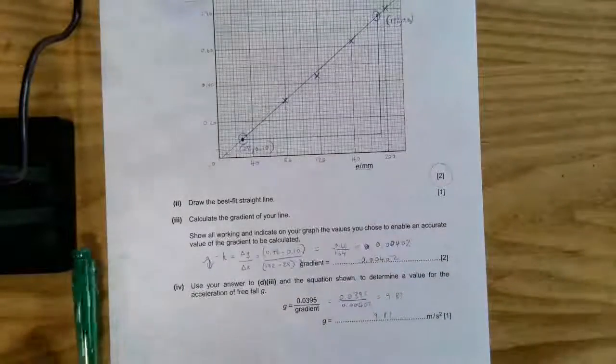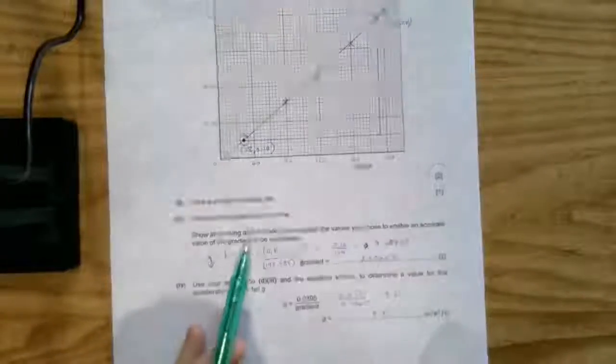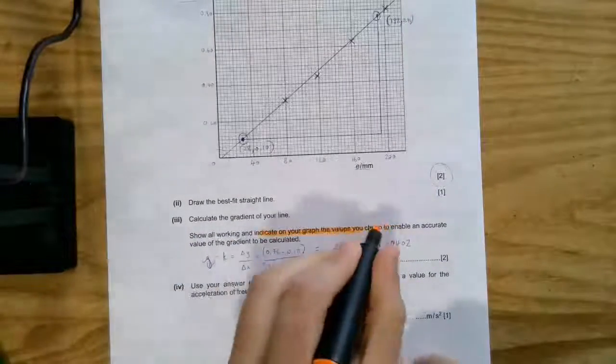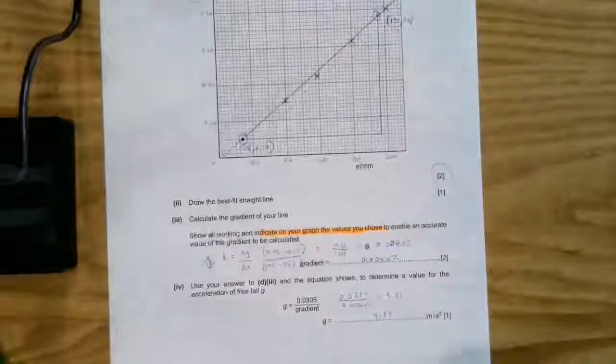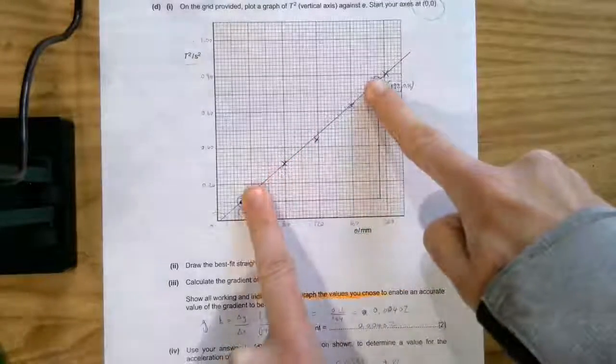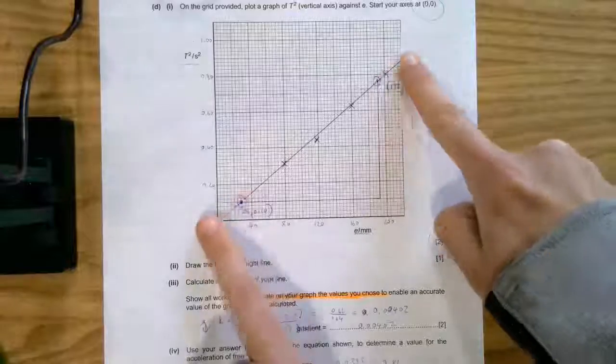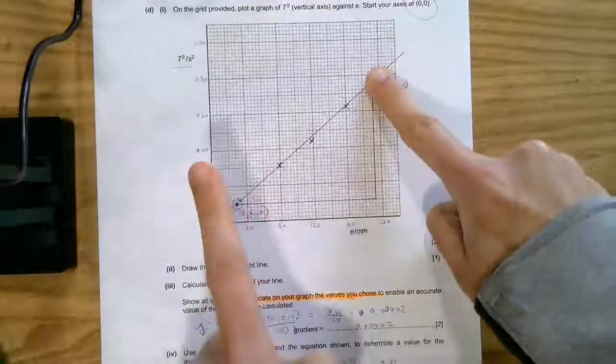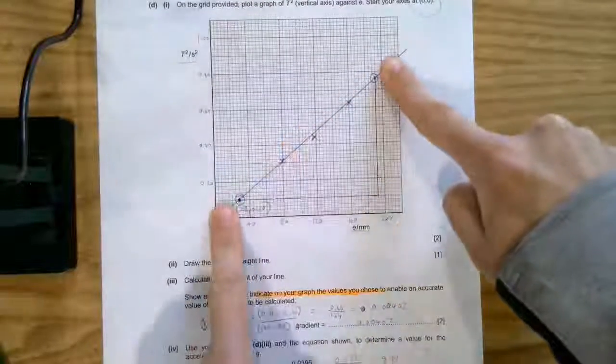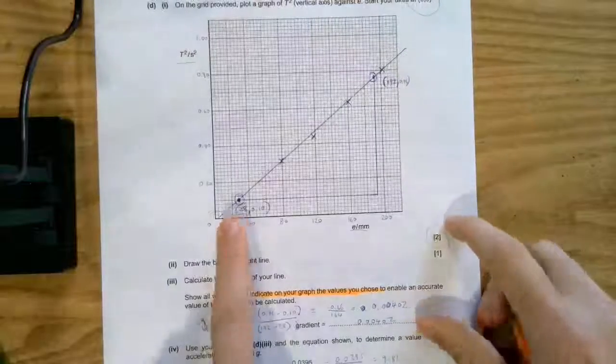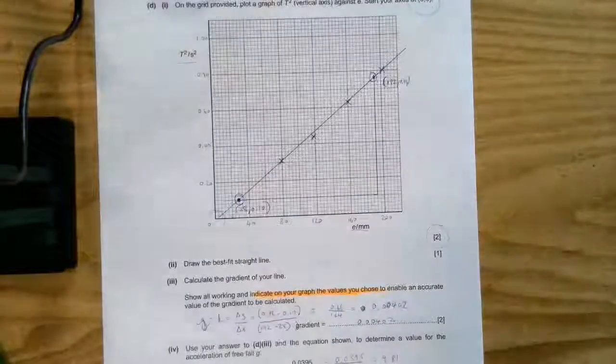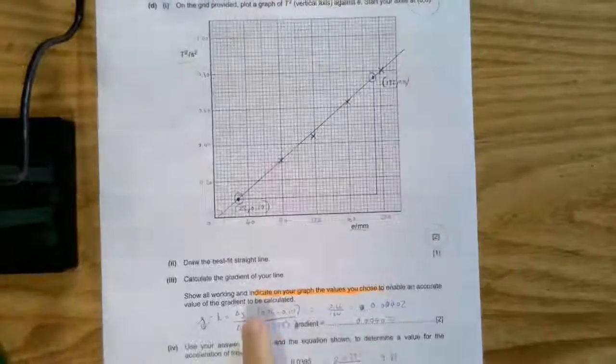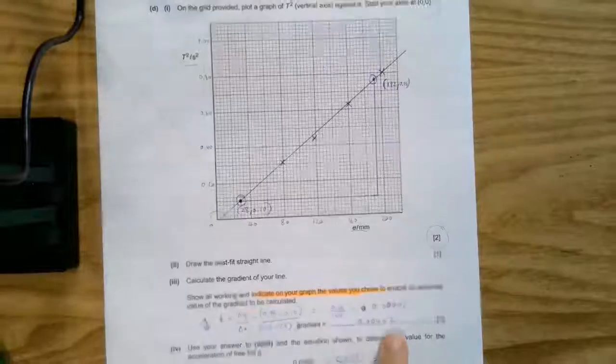You're then asked to calculate the gradient. You know this from maths, but you should be able to do it in physics. The gradient is just the change in y over the change in x. But you are being asked to show, and you're being asked to indicate on your graph the values you chose to enable an accurate value of the gradient to be calculated. It is really important that those values that you choose are very far apart, ideally as far apart as possible. But if you can't do that, come at least half of this line, the distance of this line away. So this point to this point, point one and point two should be at least half of this hypotenuse away. I've chosen these points. I've labeled their values. I'm trying to make it really easy for the person marking my paper to see what I've done. I've then taken those data values and I've calculated my gradient. I've done the top over the bottom, shown all my steps, and I've gone to a gradient to three significant figures.